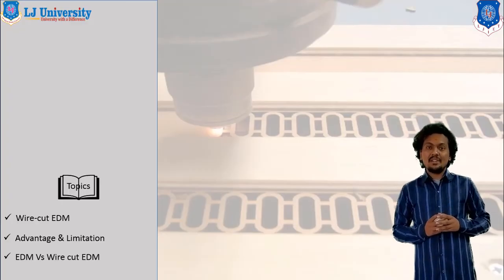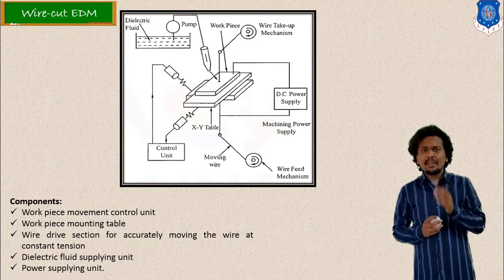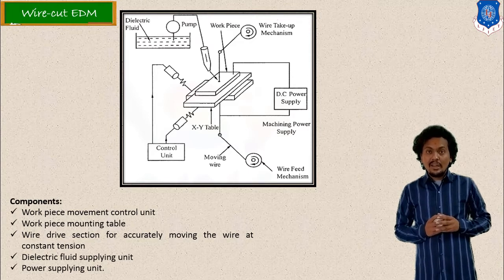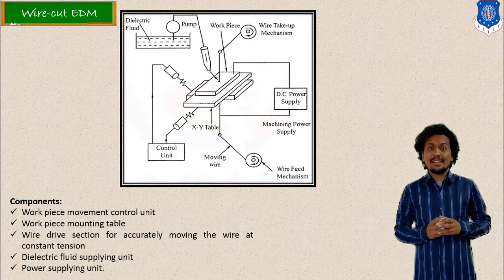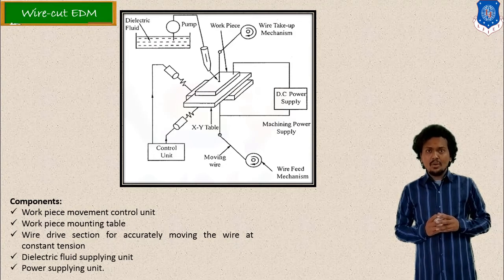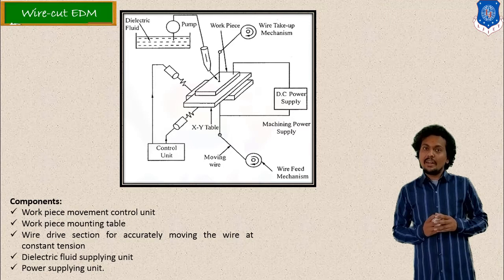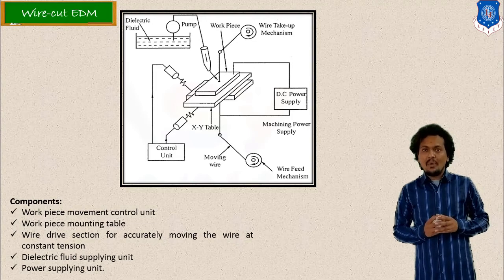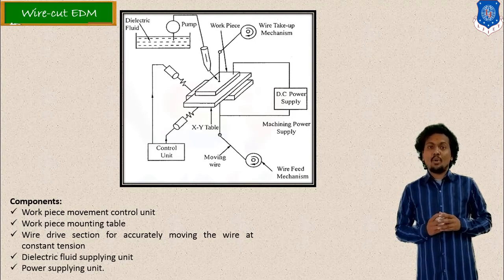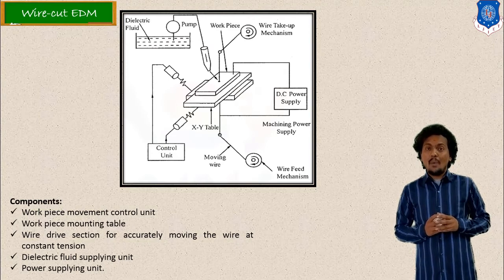Let us start our session and discussion on wire cut EDM process. As per the name, wire is used in this process. The concept remains the same because the name is EDM process, and wire cut EDM means wires are used. Generally, copper wire or molybdenum wire are used for this process. Let us start our discussion from the construction and components.